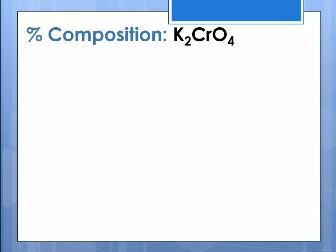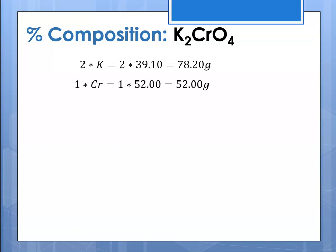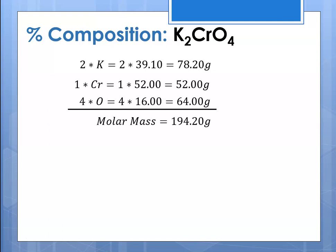Let's try potassium chromate. First, calculate its molar mass: 2 × potassium = 78.2, 1 × chromium = 52 grams, 4 × oxygen = 64. Adding them together, the molar mass is 194.20.